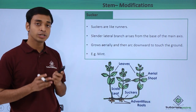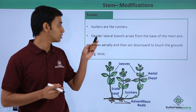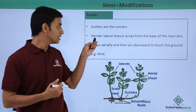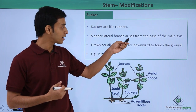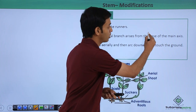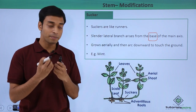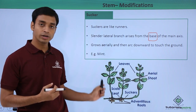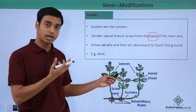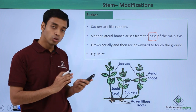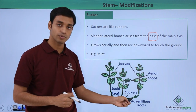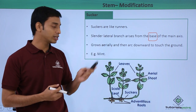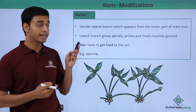The next modification is known as suckers. These are similar to runners and can also have a creeping movement along the soil. They are slender lateral branches that arise from the base of the main axis of the stem. They first grow aerially, then arc downward and touch the ground, where they form a new plant. A good example is the mint plant.